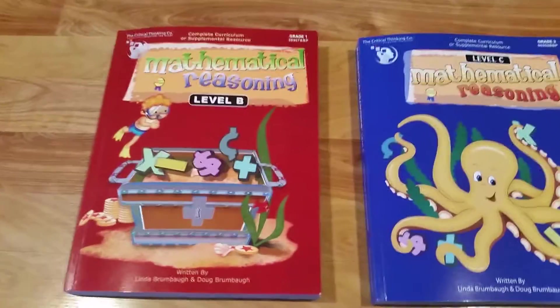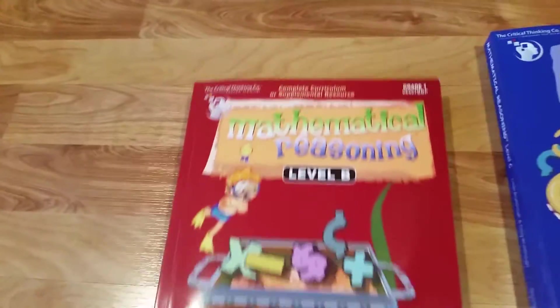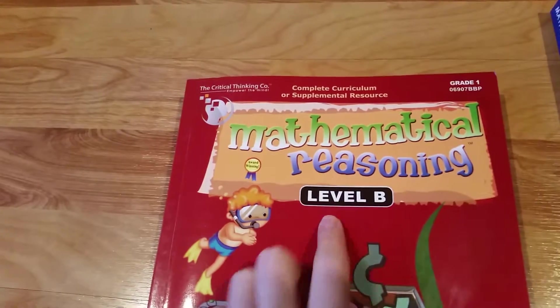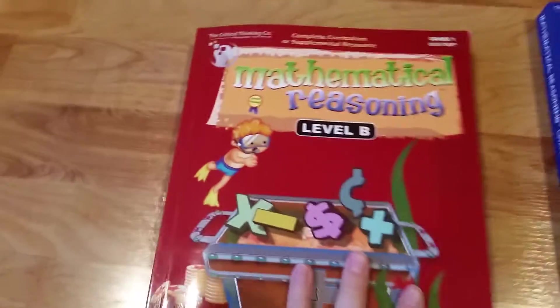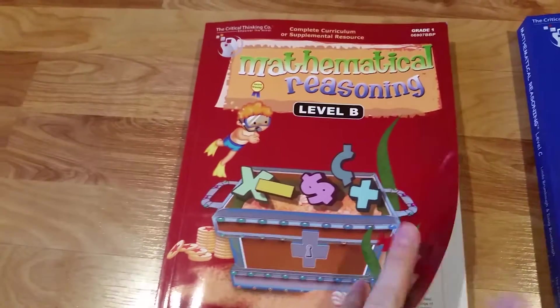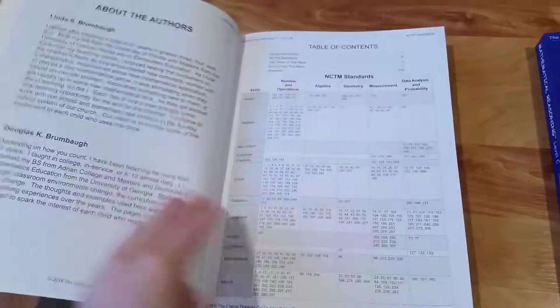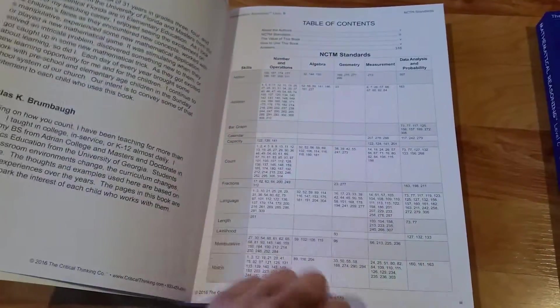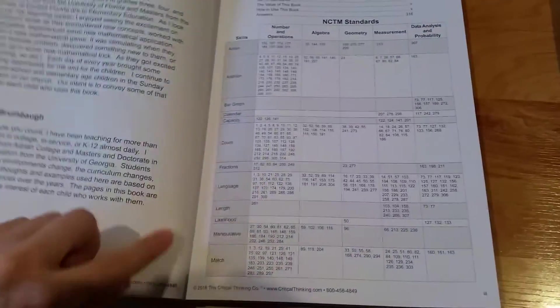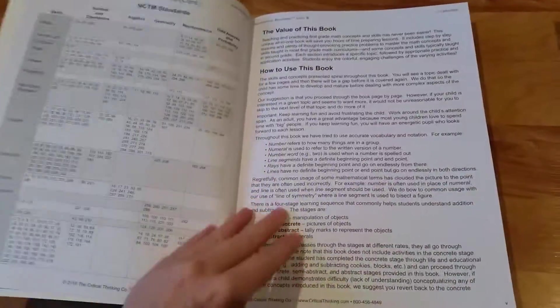For my kindergartner, I got Level B which is kind of equivalent to grade one. I looked at the kindergarten level for him and just thought it was not going to be challenging enough. It has a table of contents that shows the concepts and what pages they're on.